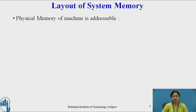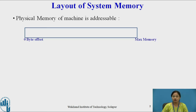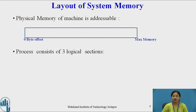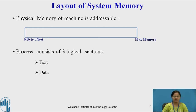Let us assume that the physical memory of a machine is addressable, which starts at byte offset 0 and goes up to the maximum memory of the system — that means it is equal to the memory present in the system. As we already know, a process consists of three logical sections. A process is nothing but a program in execution, and it consists of three logical sections: text, data, and stack.